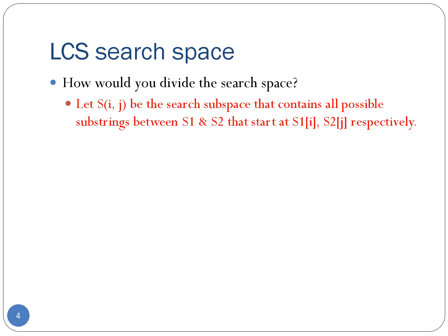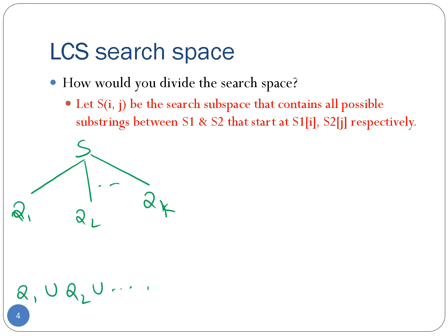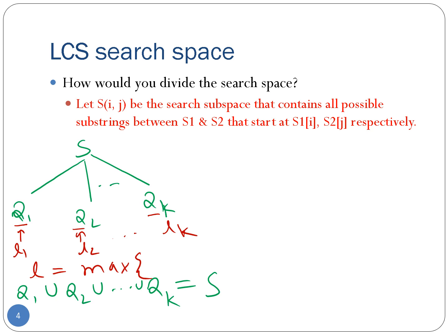How do we search the search space of all common substrings between s1 and s2? Here is the plan. We will divide the original search space s into several smaller subspaces q1, q2, and so on up to qk, such that the union of q1, q2 through qk gives back the original search space s. We will search each of these subspaces for the longest common substring inside them. The final answer is the maximum of all those values l1, l2, through lk.